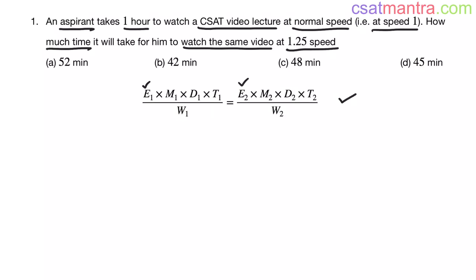Efficiency is speed, the rate at which he is doing the work. So E1 is 1, E2 is 1.25, that is 1 plus 1 by 4, this is 5 by 4. Now, W1 is equal to W2, watching the same video. So work is same.